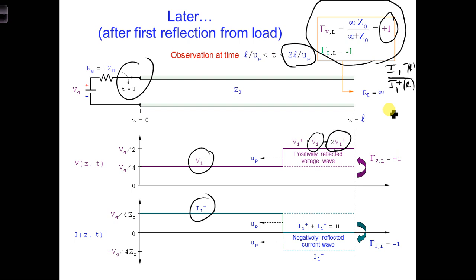Once we simplify this expression, we just get minus the reflection coefficient of the voltage at the load. Which means we can use the voltage reflection coefficient, just add a minus sign, and you have the current reflection coefficient.